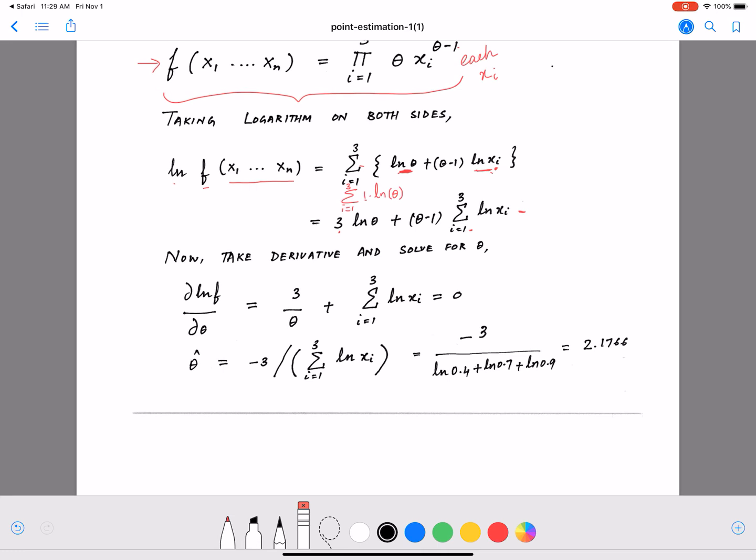Differentiating log theta becomes 1 by theta. Then we get theta times sigma i equals 1 to 3 ln xi. Differentiation of theta with respect to theta is 1, so we only get this part here. Then we have another minus sigma i equals 1 to 3 ln xi, which has no theta term, so that becomes a constant with respect to theta and differentiates to 0.